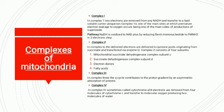In Complex 2, electrons are delivered to ubiquinone pools originating from succinate and transferred via coenzyme Q. Complex 2 consists of four subunits: mitochondrial succinate dehydrogenase complex subunit C, succinate dehydrogenase complex subunit D, electron transporters, and fatty acids.